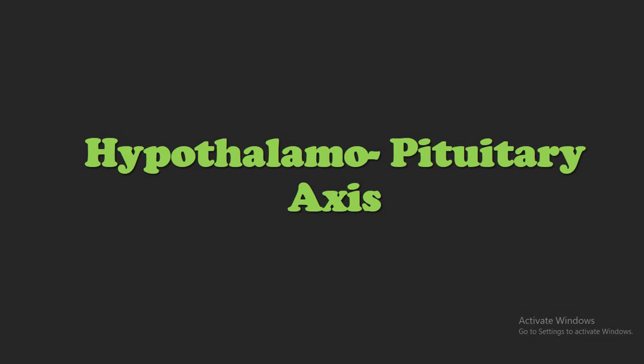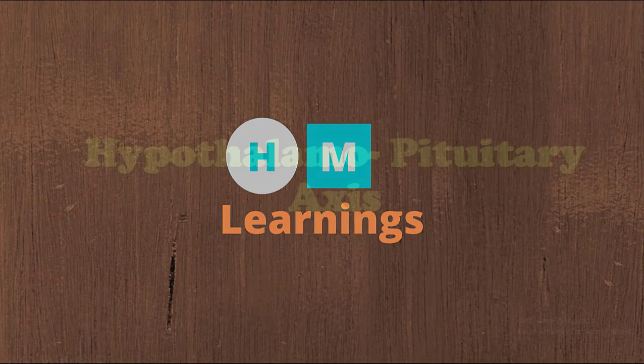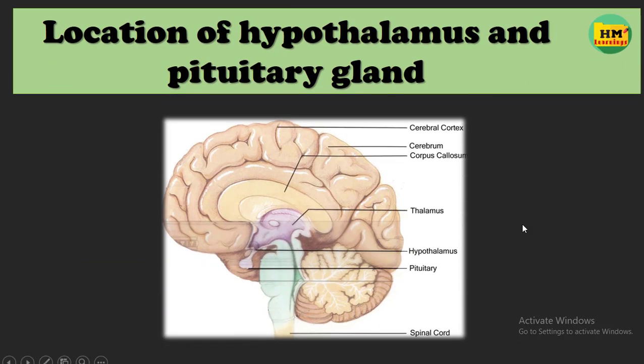The endocrine system is the system which coordinates and controls our body. In this video, we are going to start the endocrine system by discussing the hypothalamo-pituitary axis. Welcome back to HM Learnings. I am Harshita, the creator of HM Learnings, where students come to clear their concepts and to get the study material. Make sure that you have subscribed to my channel.